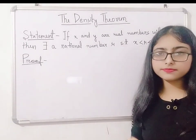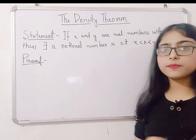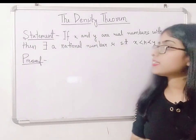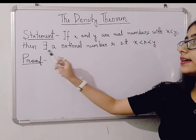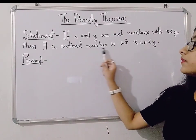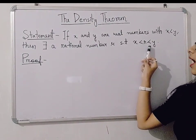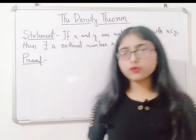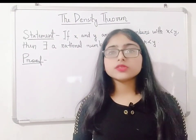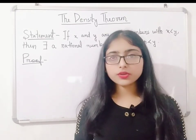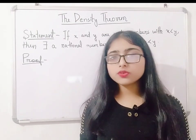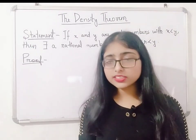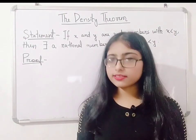So today I am going to do the proof of density theorem. First of all, let's see the statement. If x and y are real numbers with x less than y, then there exists a rational number r such that x less than r less than y. So if x and y are two real numbers and x is smaller than y, then there is one rational number within them.